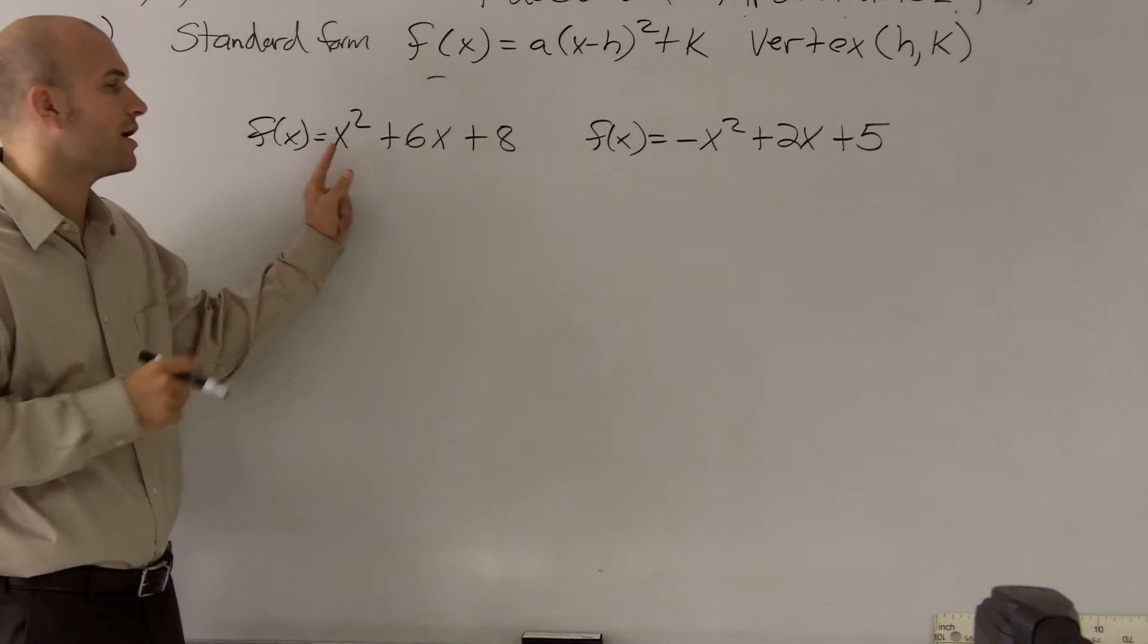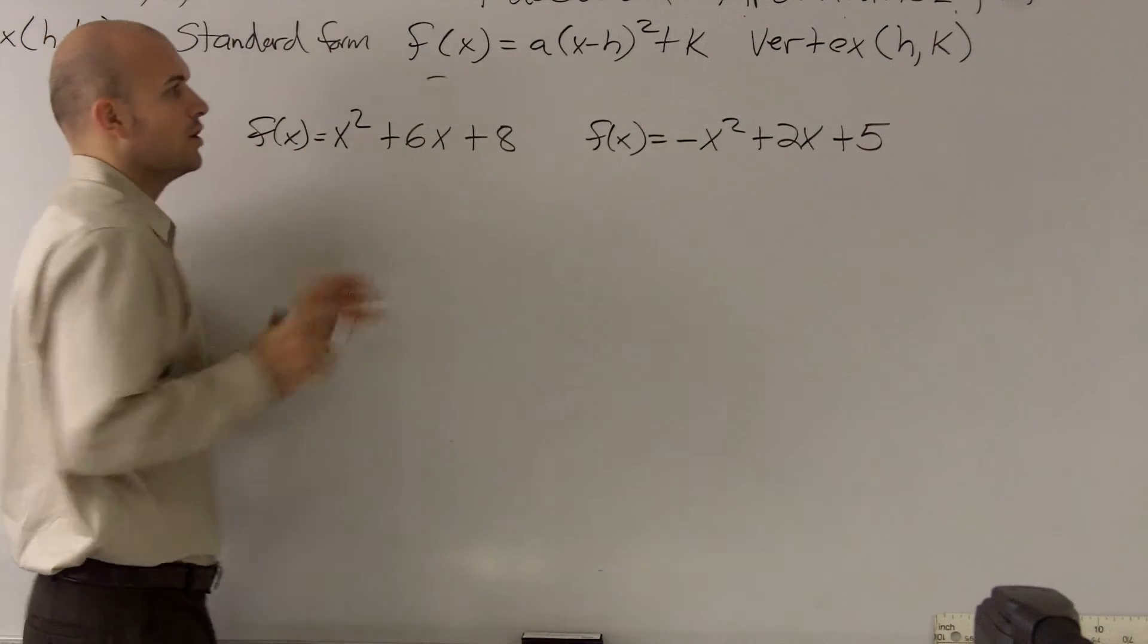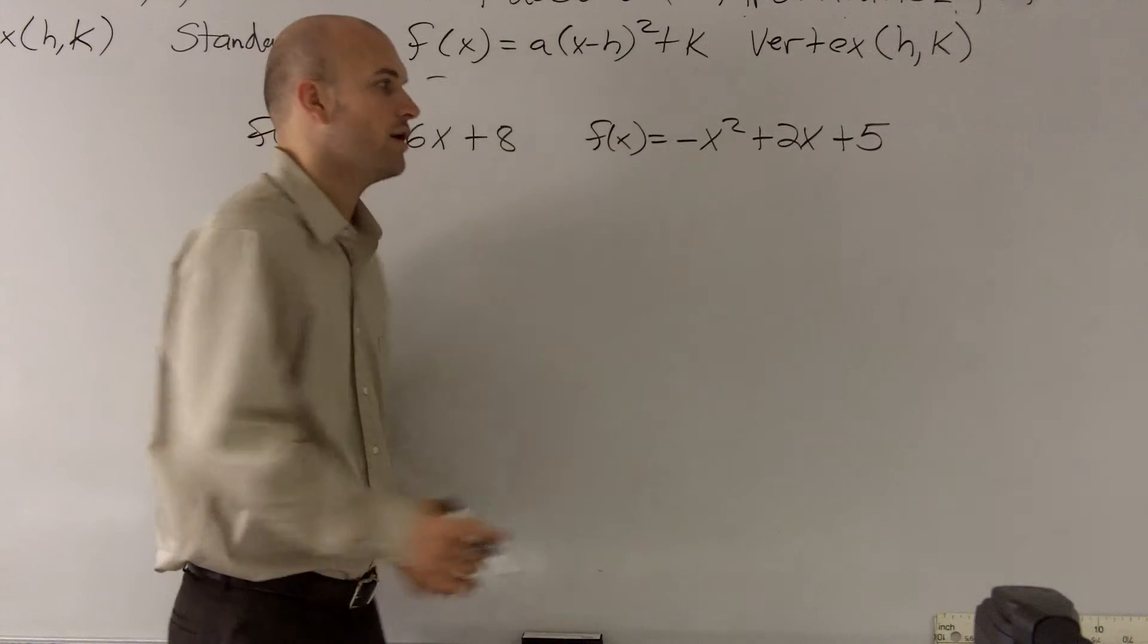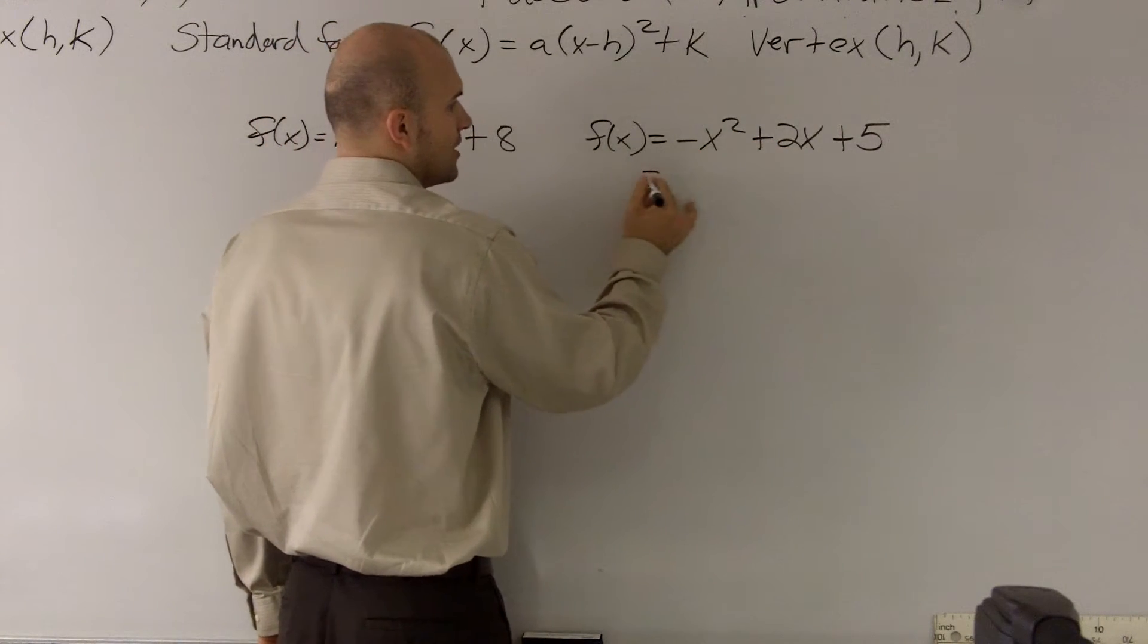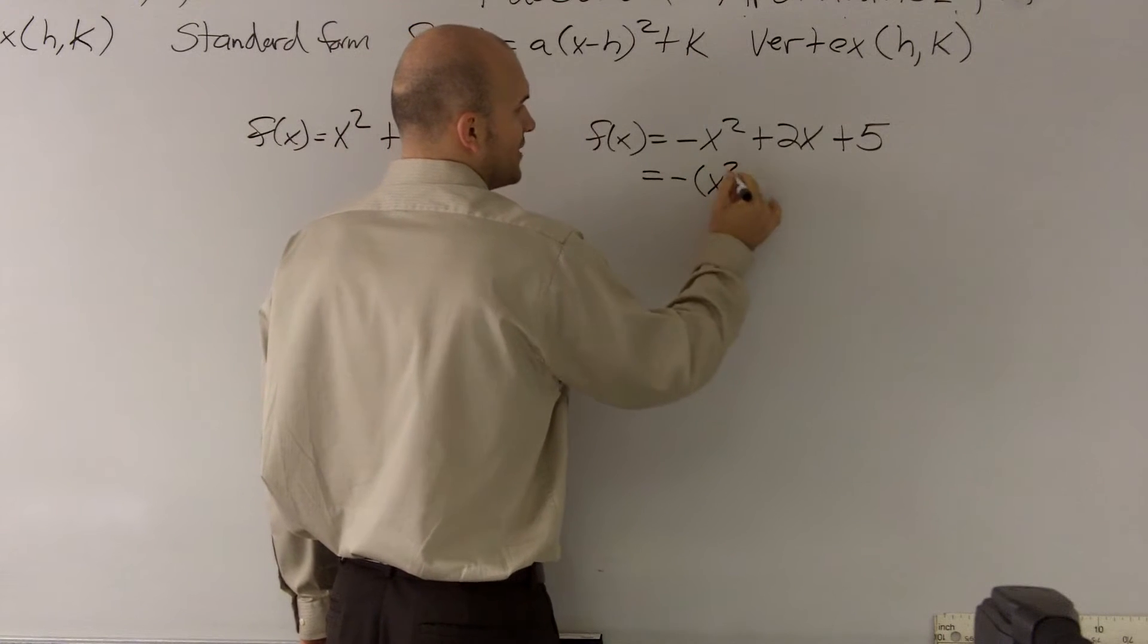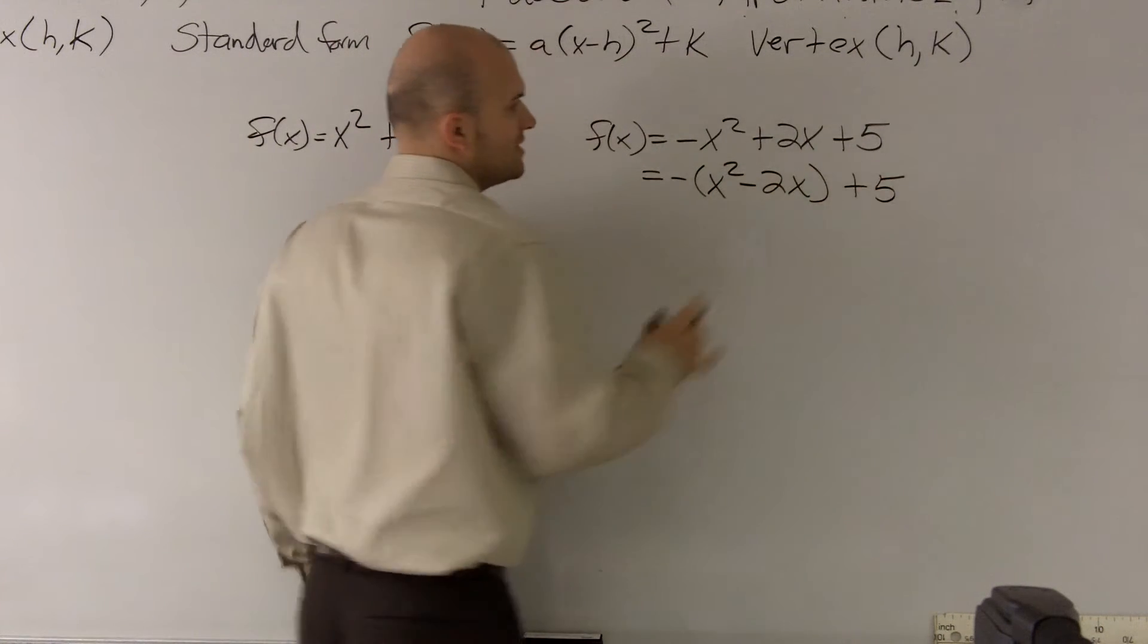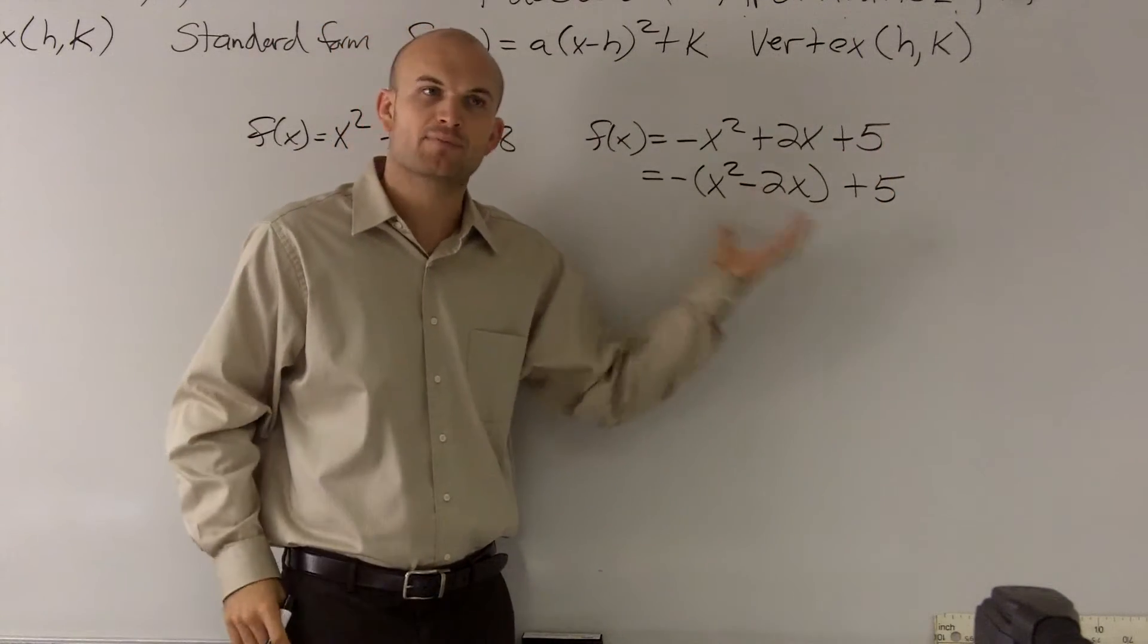This one is okay. Over here though we have a negative 1, so I need to factor out my negative 1 and I need to factor it out with my x squared and my x term. So I'm going to rewrite this as negative x squared minus 2x plus 5. We don't need to factor negative 1 from the 5 because it's not really going to help us find a perfect square.